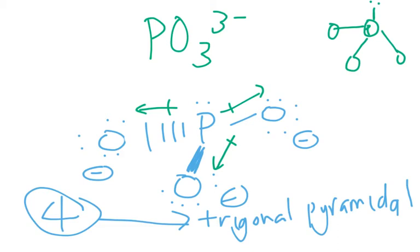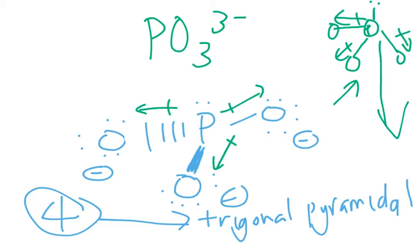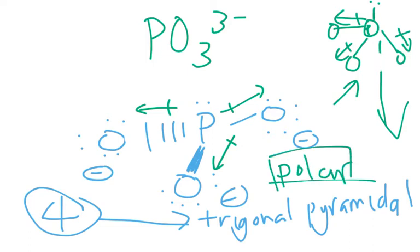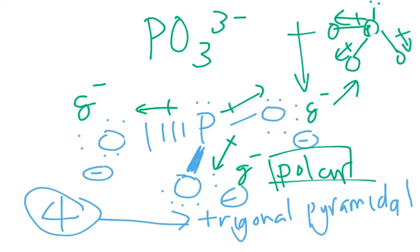Is phosphite polar or nonpolar? In the 3D drawing, if we draw the bond dipoles, notice how they're all pulling downwards, and there's nothing pulling back up — so these vectors are not being canceled out. That means this phosphite ion is going to be polar. The net dipole points downward. The three oxygens will be partially negative, and the top — the phosphorus end — will be partially positive, since the arrows are pointing away from it.